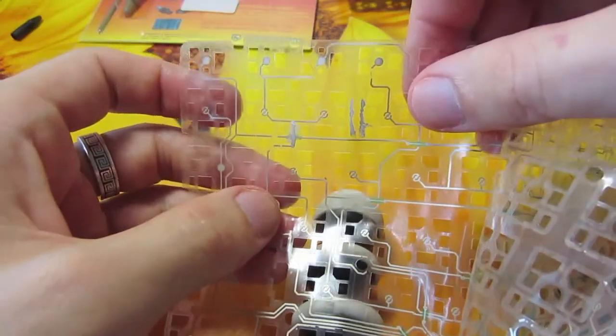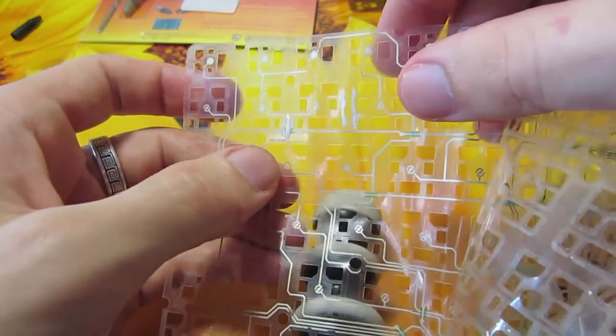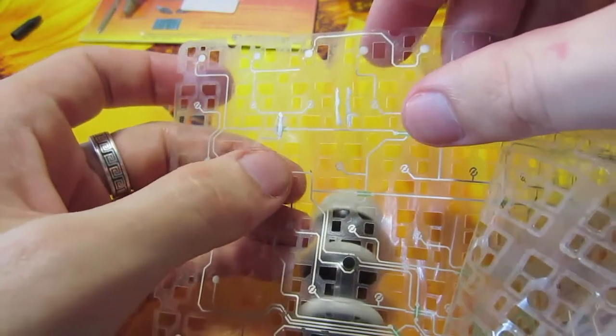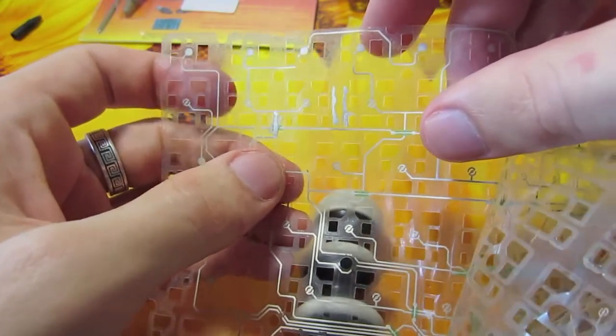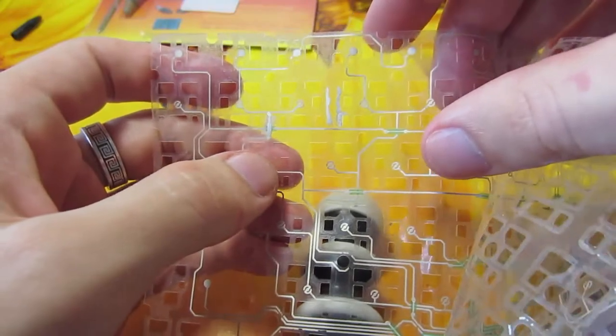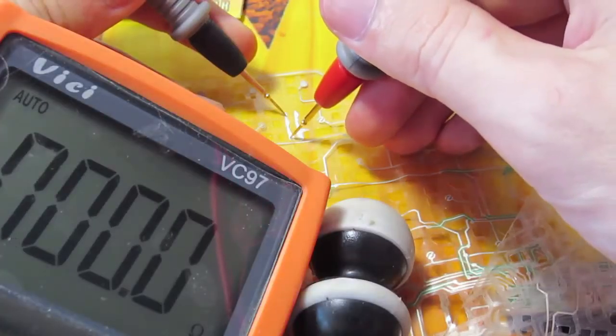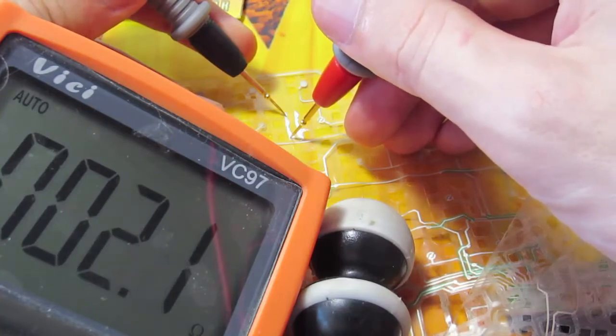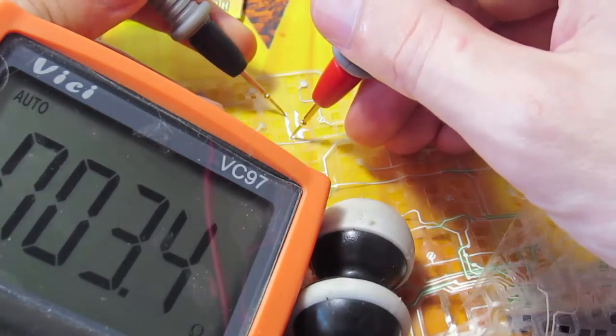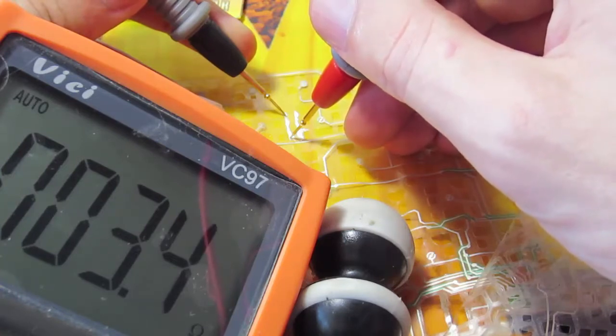One day had passed. Our rods from conductive glue are dry now and we can check the resistance. 3.4 ohms.